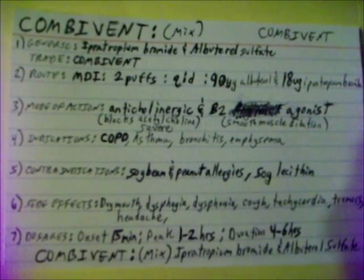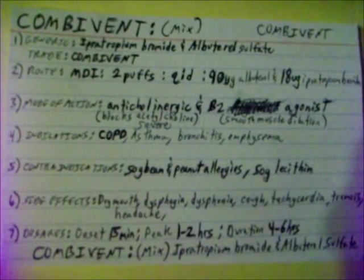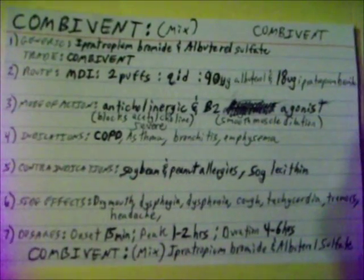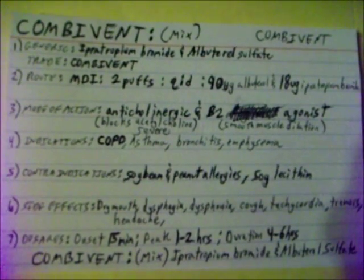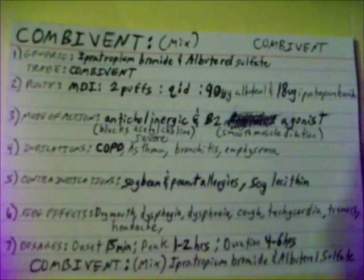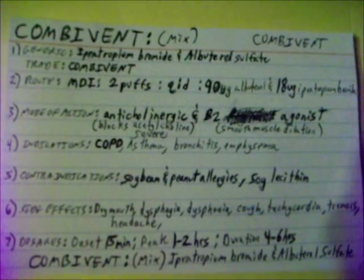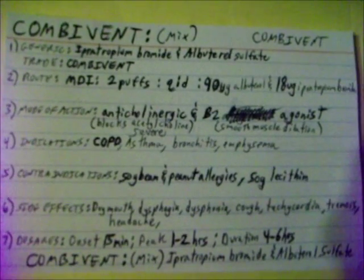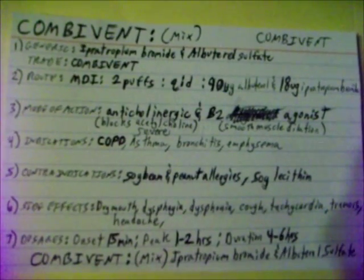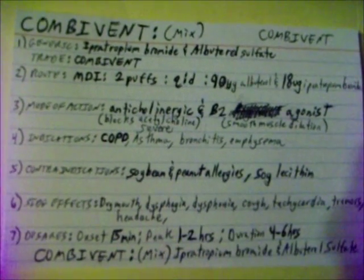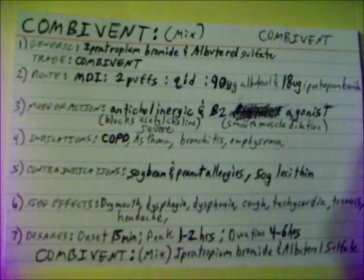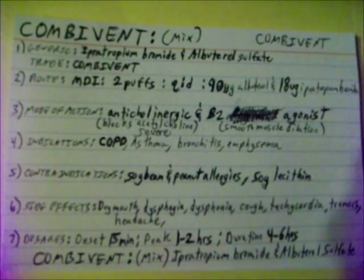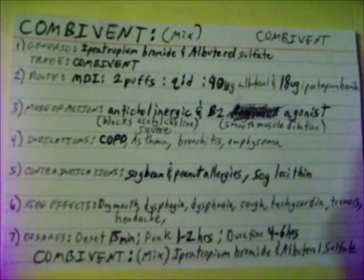Contraindications for Combivent: not for patients with soybean and peanut allergies. Side effects are dry mouth, dysphagia, dysphonia, cough, tachycardia, tremors, and headache. Combivent's onset is 15 minutes, peaks in 1 to 2 hours, and duration is 4 to 6 hours.